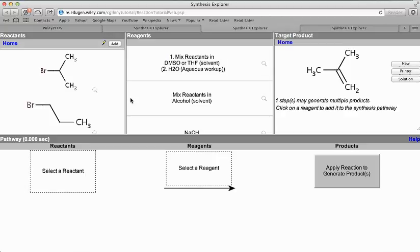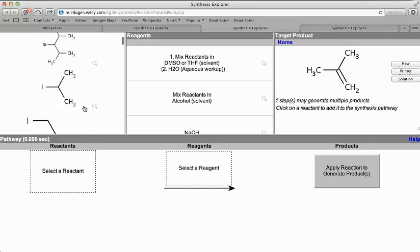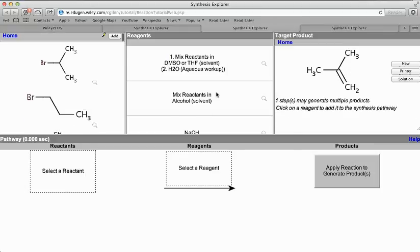Within Synthesis Explorer, you have three different columns. Unlike Mechanism Explorer, where you're drawing arrows and using the Marvin Sketch palette, here what you're doing is just picking chemicals and mixing them together to get the product. So you're trying to figure out how to make this product starting with these different chemicals and reagents.